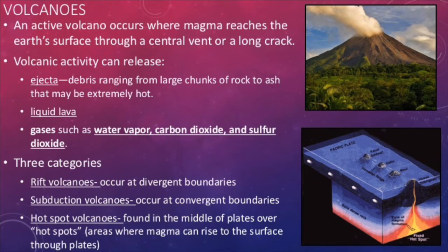There are three major categories of volcanoes, all based off of where they are formed. Rift volcanoes occur at divergent boundaries — notice that we also have rift valleys at divergent boundaries. Subduction volcanoes occur at convergent boundaries — this is the only place you see subduction of plates. Hot spot volcanoes are a little different: they don't form along plate boundaries but actually in the middle of them, in areas where there's a superheated area in the mantle that forces magma to the surface. Examples include Yellowstone National Park's volcanoes and the Hawaiian Islands.